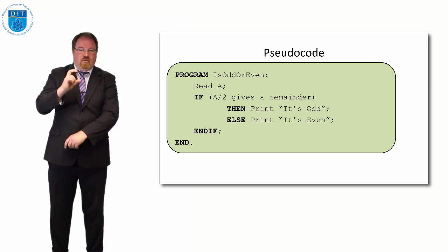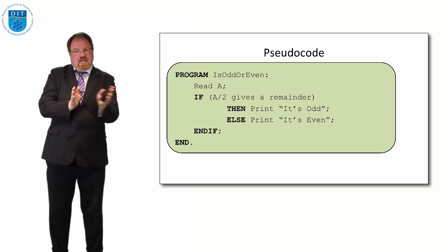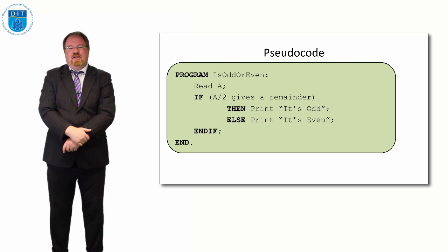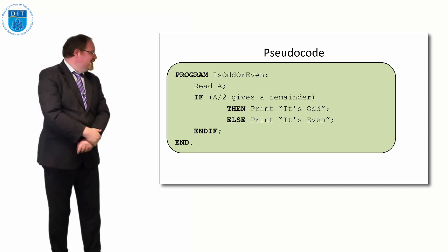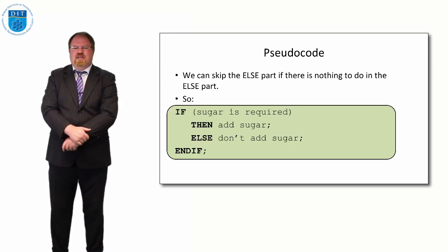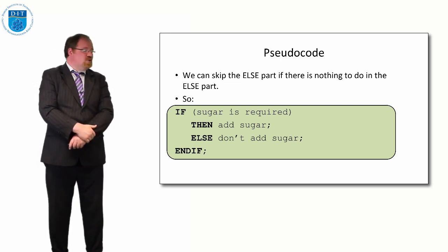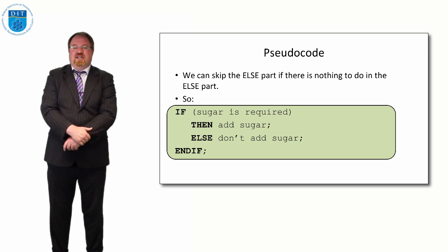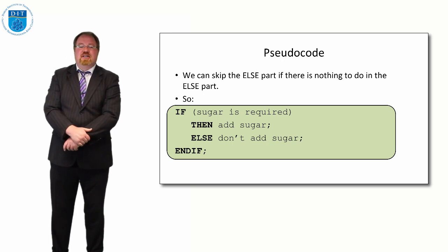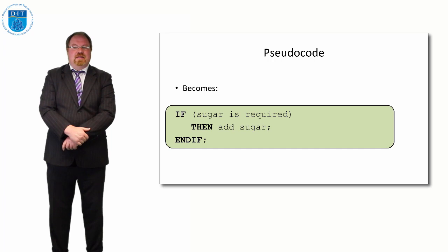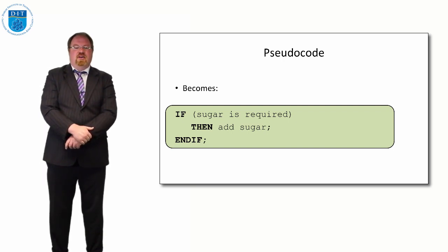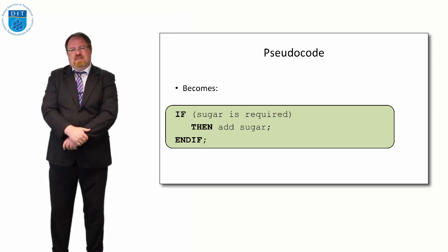If we read in 6 it'll print 'it's even'; if we read in 7 it'll print 'it's odd'. We'll never get a case where both 'it's odd' and 'it's even' are printed together, because the if statement is like a divergence in the road — a split in the path. We either take the then path or the else path, we don't take both. We can also skip the else part entirely. In the sugar example, the else that says 'don't add sugar' is fairly redundant — we could just say: if sugar is required then add it, and if we don't do the then part we won't add sugar at all.